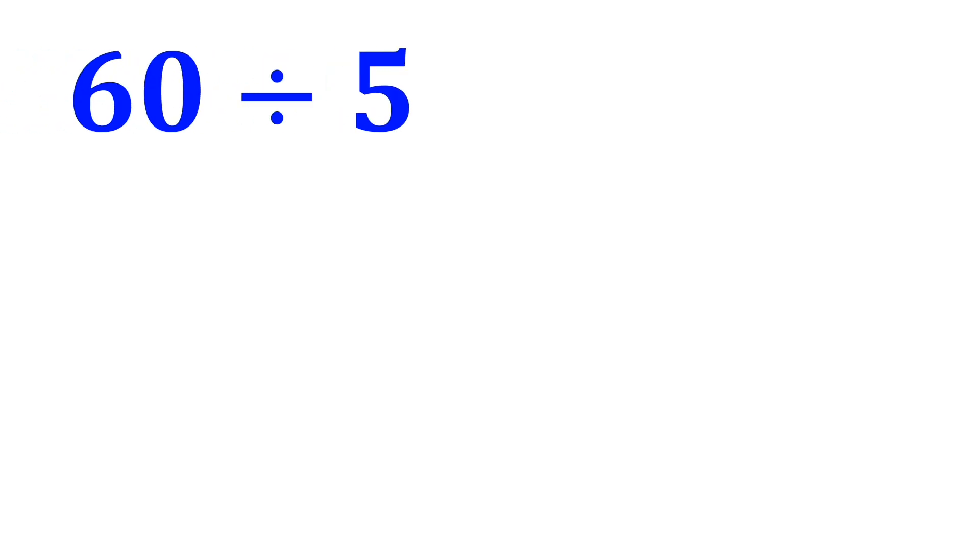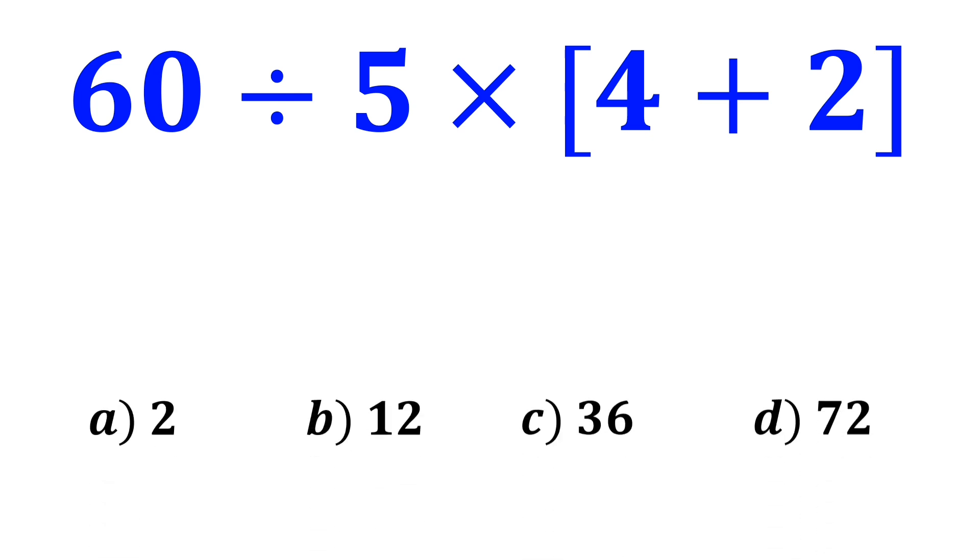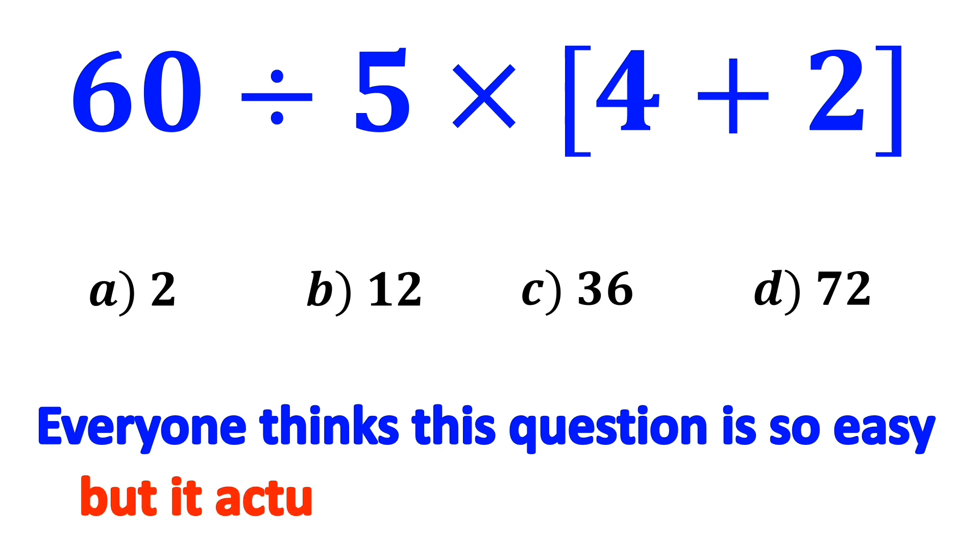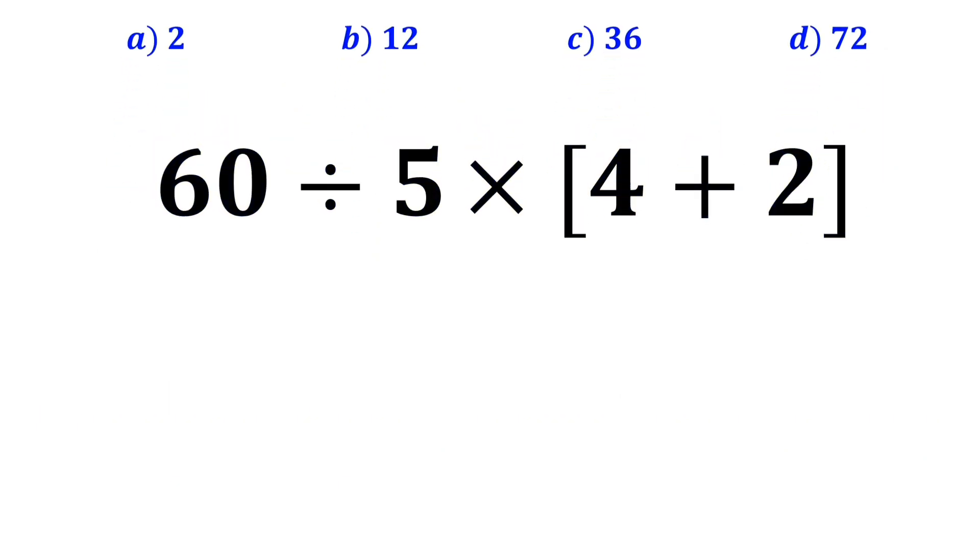What is the value of the expression 60 divided by 5 times open bracket 4 plus 2 close bracket? Which option do you think is the correct answer to this question? Everyone thinks this question is so easy, but it actually tricks a lot of people.